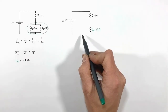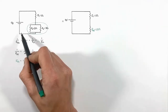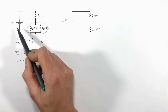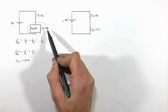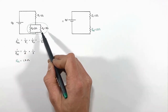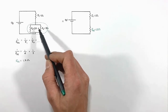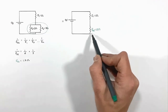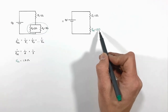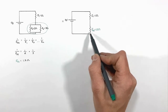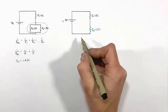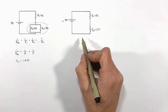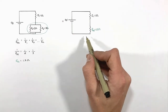Now what we have is an equivalent circuit — this circuit behaves exactly like the original did, except we've taken the 2 ohm and 3 ohm resistors and replaced them with a single 1.2 ohm resistor at the same spot in the circuit. Remember, we're trying to find the equivalent resistance of the entire circuit.